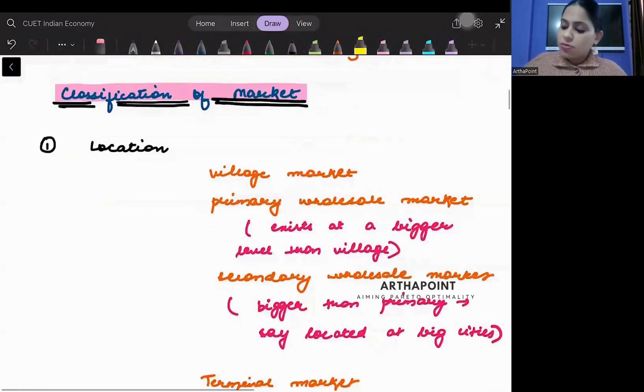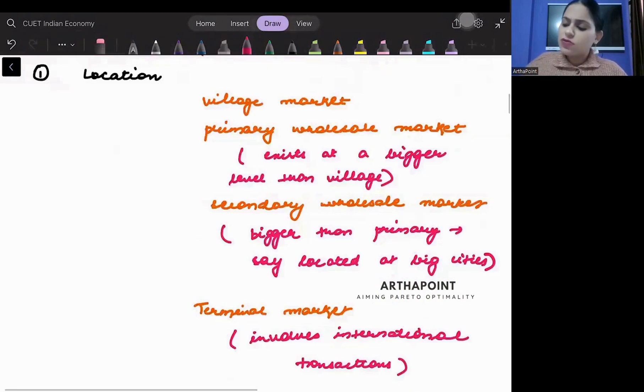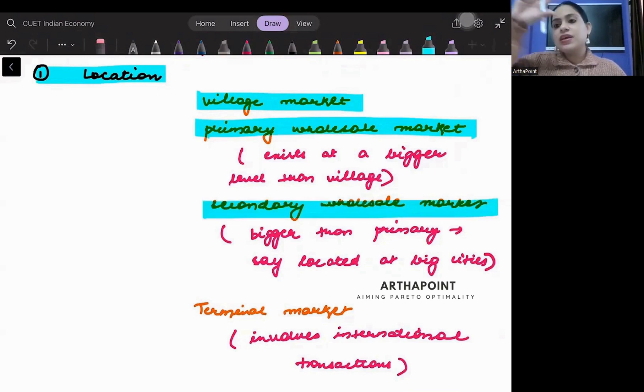Now let's talk about the classification of market. Markets can be classified on various basis. I have just tried to give you some of the basis of classifying market. First is location. On the basis of location you have village market, which is chhotu market, very small market. Then you have primary wholesale market, which is bigger than the level of the village. Secondary wholesale market is located in big cities.